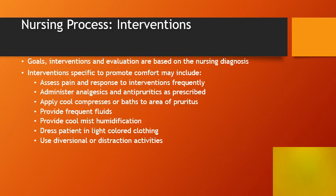Interventions, goals, and evaluations are based on the nursing diagnosis, so assessment findings lead to diagnosis and then to interventions. For impaired comfort or pain, interventions include: frequently assessing pain and response to interventions, administering analgesics or antipruritics as prescribed, applying cool compresses or baths to pruritic areas, providing frequent fluids, providing coolness and humidification, dressing the patient in light-colored clothing, and using diversional or distraction activities.